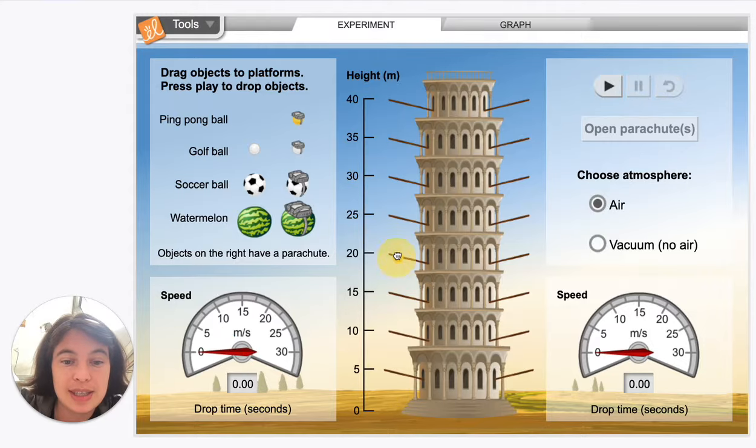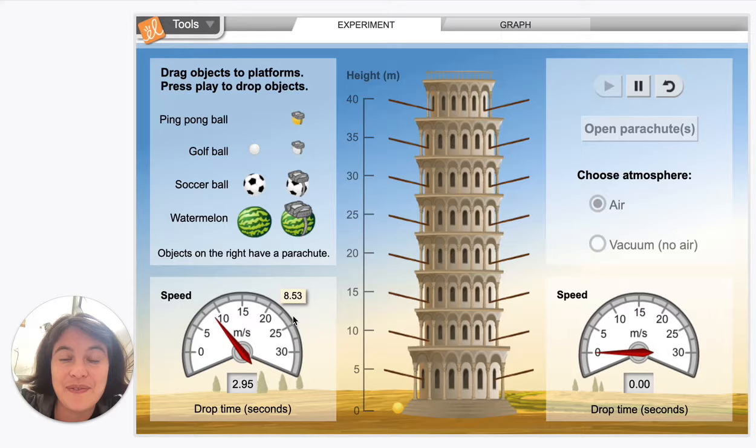If we drop this from 20 meters in height, you can see the velocity increased to 8.53 meters per second, and it took 2.95 seconds to fall.